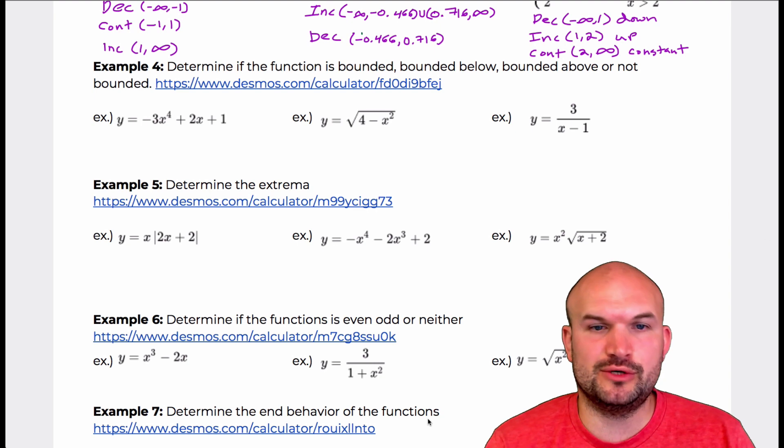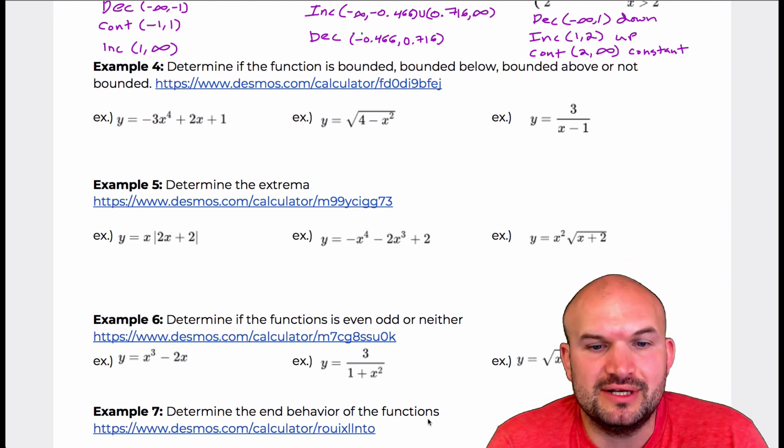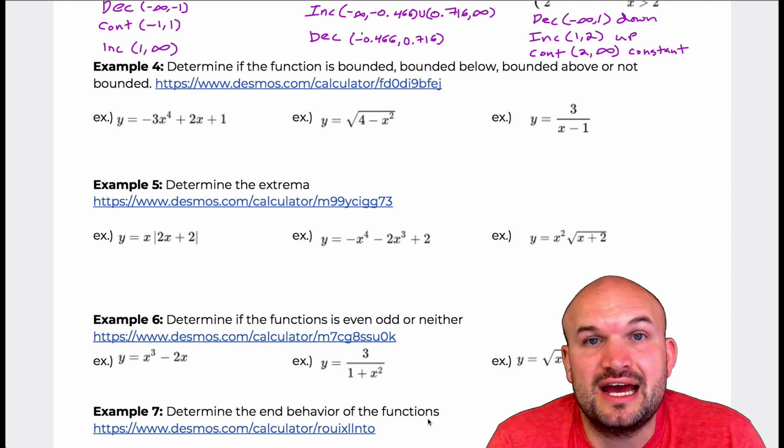I have three equations that I want to take a look at. Remember, if it's bounded above, that means the graph does not go above a given value, meaning the graph is going to have an absolute maximum.